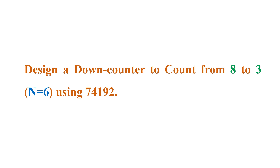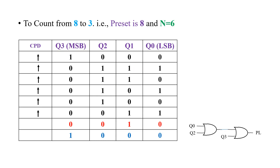Let us get into the solution. This is going to be the truth table. It has to count from 8 to 3, so preset value is going to be 8 — the beginning value must be equal to 8. Total number of counts it is going to make is equal to 6. Therefore, n will be equal to 6. Clock down is being used here. So Q0 to Q3 — as we can see, it is starting from the value 8 and moving towards 3. After 3, it must come back to this value.